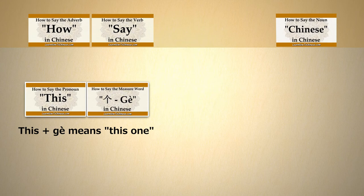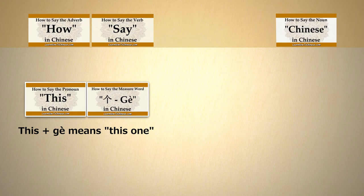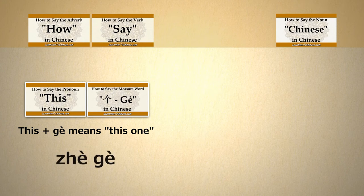Just like in English, we say this one, that one, which one? 这个,那个,哪一个. So, this one is 这个. One more time, 这个.